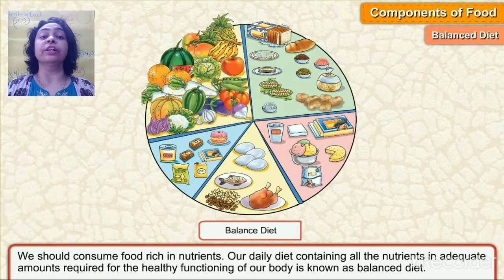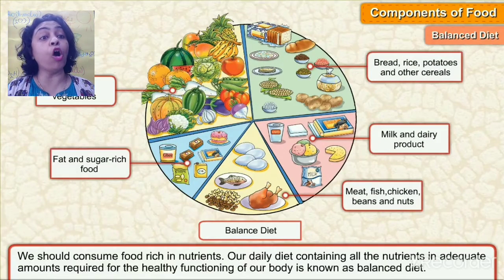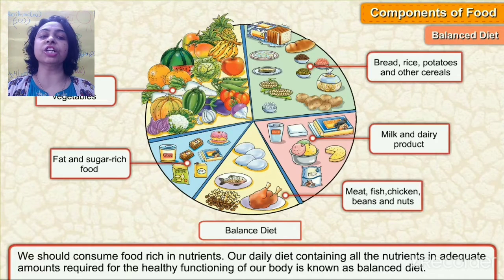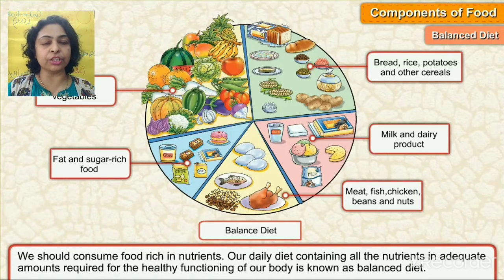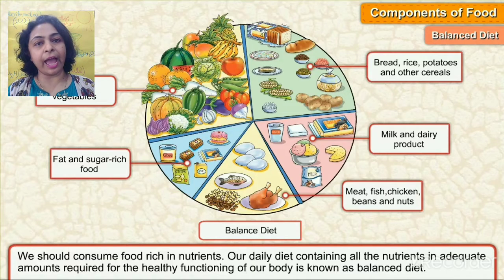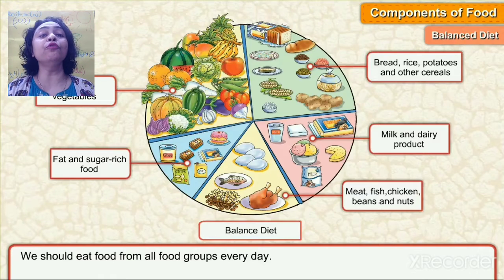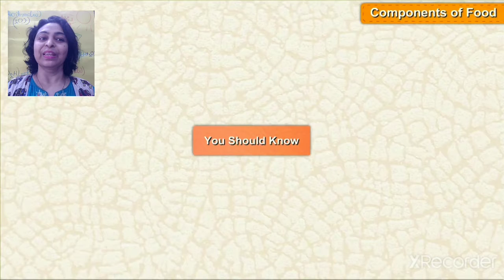Balanced diet means our daily diet should contain all the nutrients in adequate amounts required for the healthy functioning of our body. It should have carbohydrates, proteins, fats, vitamins, minerals, water, and roughage. We should eat food from all food groups every day.